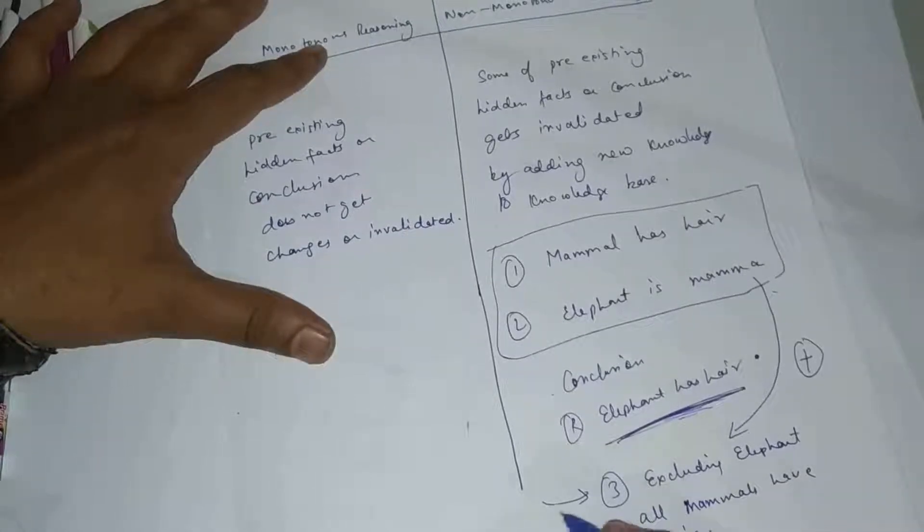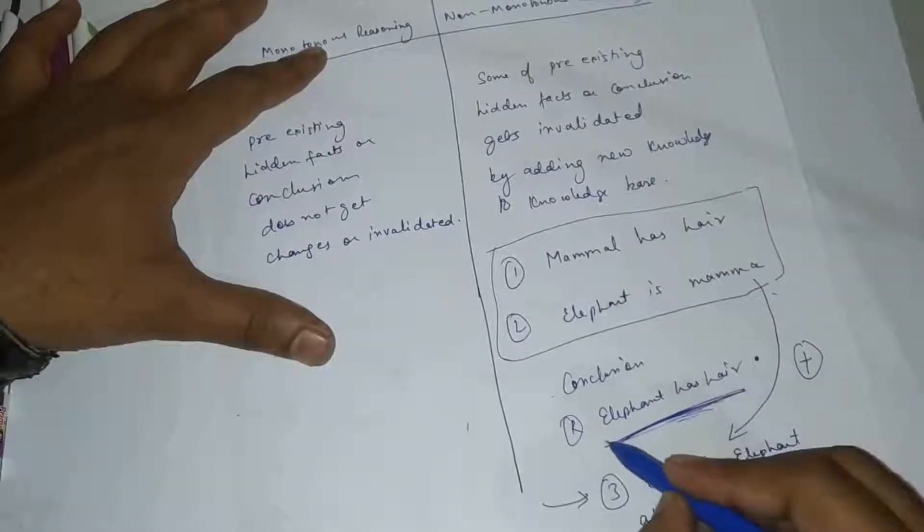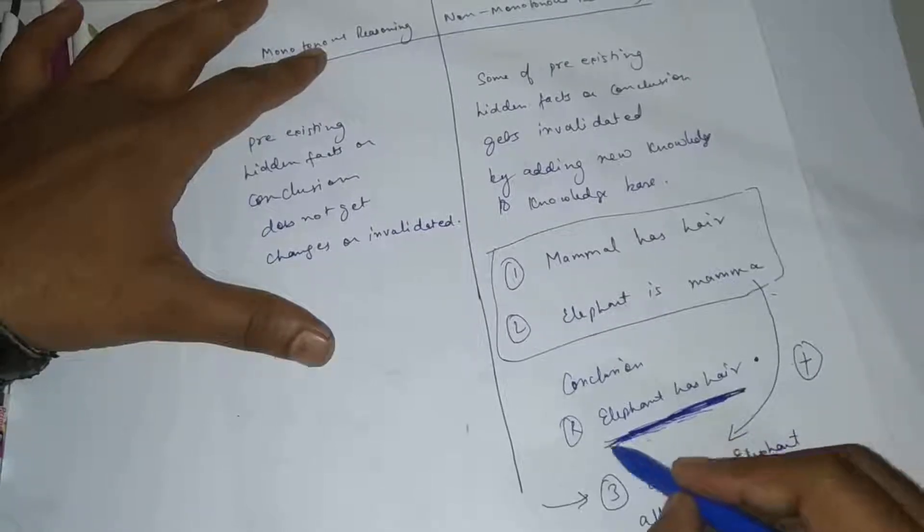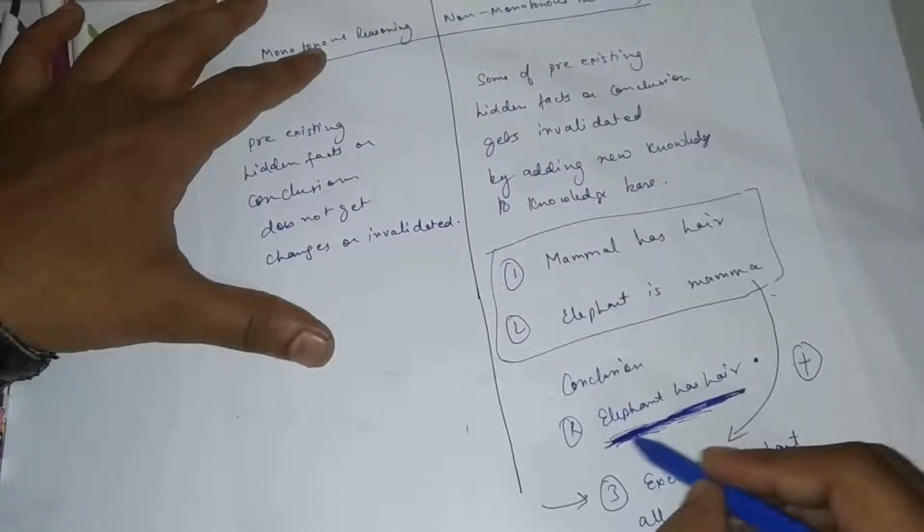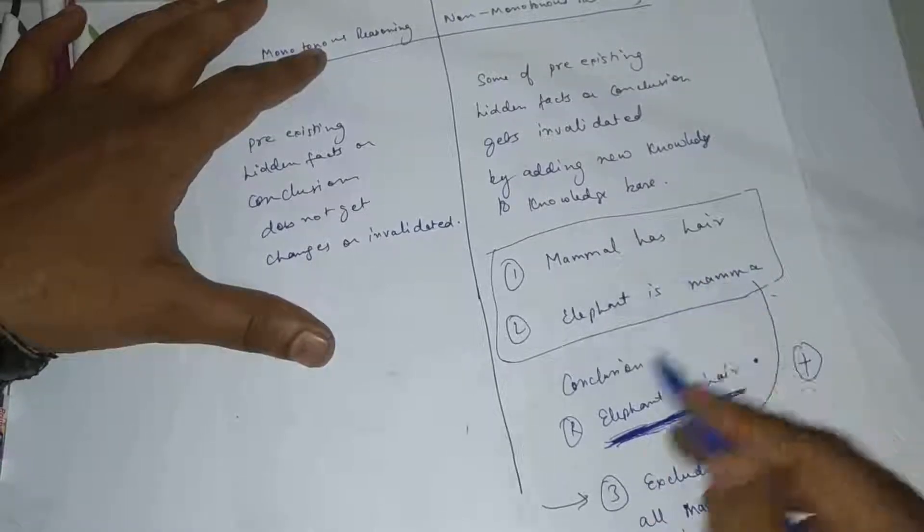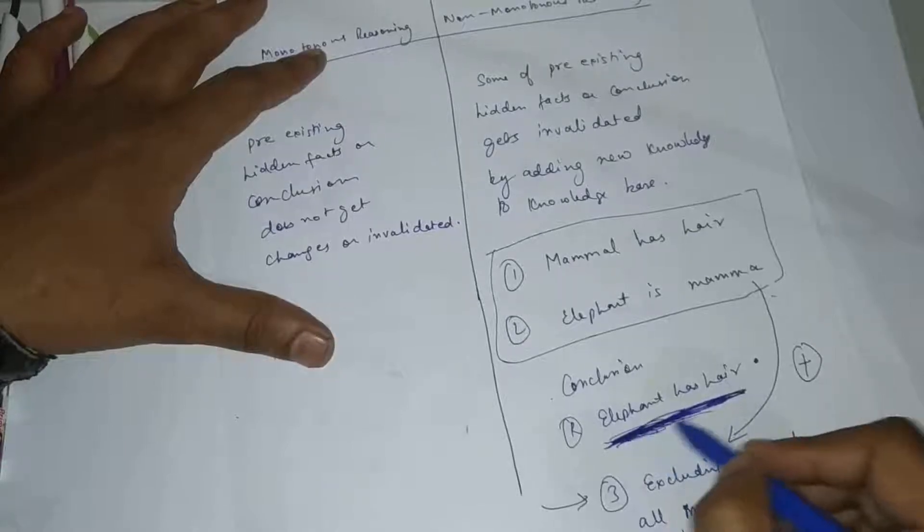Now I have added this fact in the knowledge base. My pre-existing conclusion was invalidated, which was right at that time but now is wrong. Elephant has hair - which I derived from these two facts - now I have added a new fact and my conclusion was invalidated.